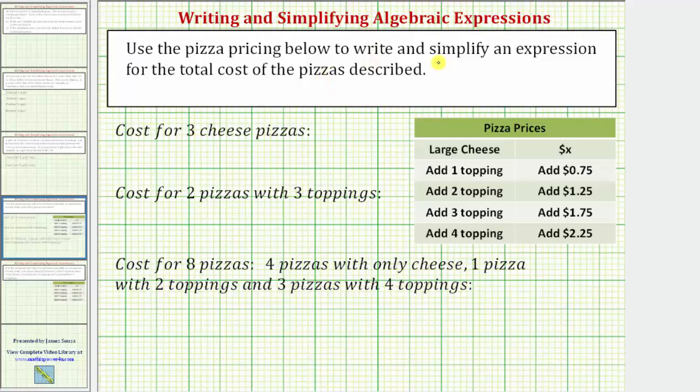Use the pizza pricing below to write and simplify an expression for the total cost of the pizzas described. Looking at the table, notice the cost of a cheese pizza is x dollars, then there's an extra cost for additional toppings.